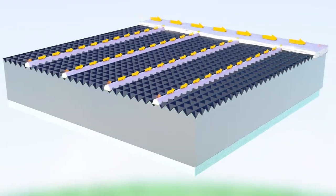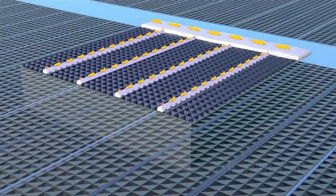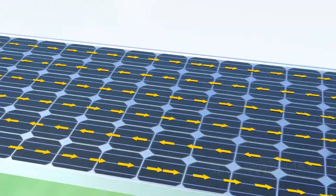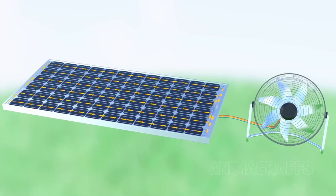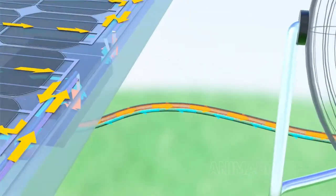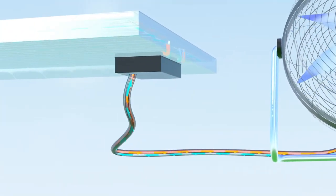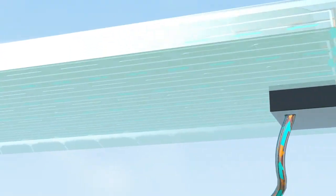Excited electrons travel out of the cell and through an external circuit where they exchange this newly gained energy to do work. The spent electrons return to the cell, ready to absorb more photons.